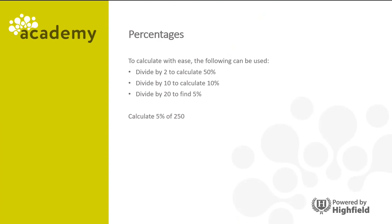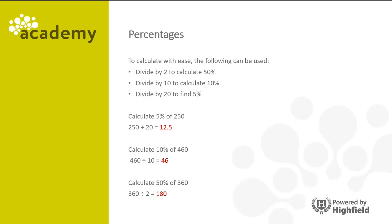So we'll calculate 5% of 250. Remember, we can divide by 20 to find 5%, so in your calculator type 250 divided by 20, and you'll get 12.5. Calculating 10% of 460 — divide by 10, so 460 divided by 10 is 46. For 50% of 360, remember we can divide by 2, so 360 divided by 2 is 180.